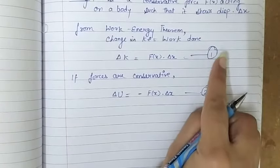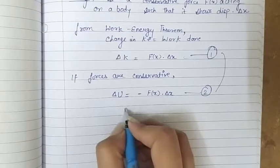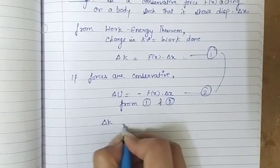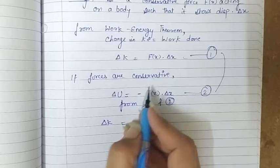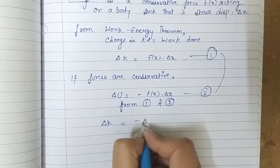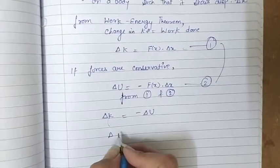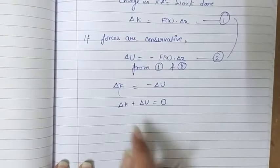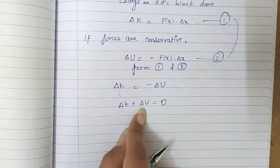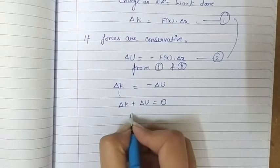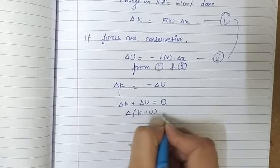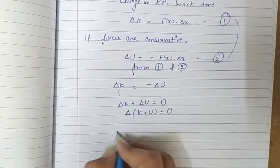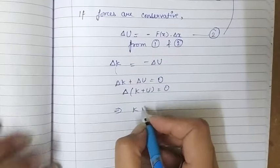Now comparing equations one and two, we get delta K equal to negative of delta U. Rearranging, we get delta K plus delta U equals zero. Since the sum of the change in kinetic energy and the change in potential energy is zero, that means the total energy is constant. We can write delta of (K plus U) equals zero, meaning the total change in the sum of kinetic and potential energy is zero. Since the change is zero, the value of kinetic energy plus potential energy must be some constant.